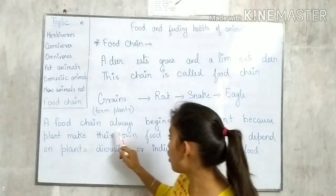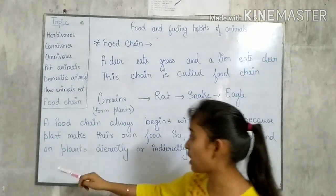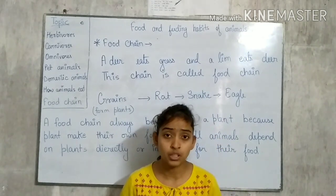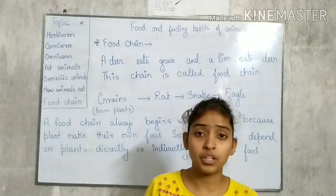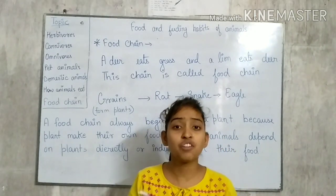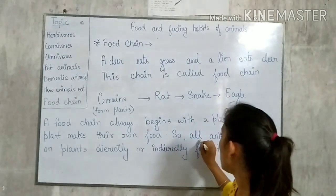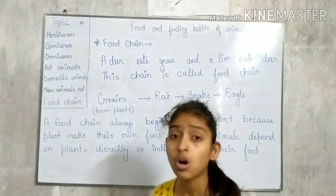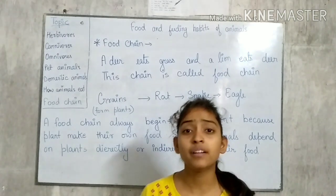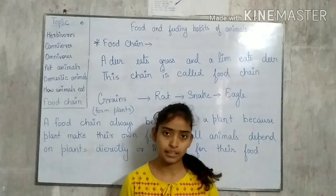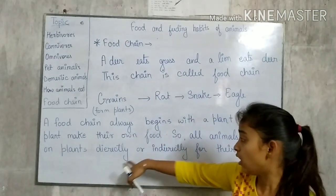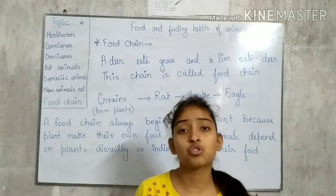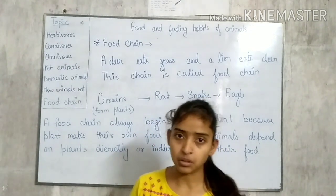A food chain always begins with a plant, because plants make their own food. Plants make food inside their body, while we humans make food outside our body. So all animals depend on plants either directly or indirectly for their food. Plants are the main source of food for humans and animals.